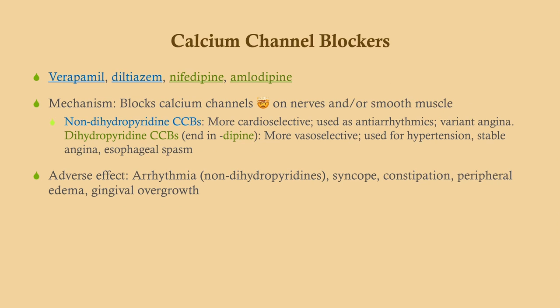This is one that trips a lot of people up — the calcium channel blockers. There are two classes, and that confuses people. The four most commonly used are verapamil, diltiazem, nifedipine, and amlodipine. Those first two — verapamil and diltiazem — are not used for hypertension; they are cardio-selective. You have calcium channels on your heart and on your vasculature. The non-dihydropyridine calcium channel blockers are more cardio-selective.